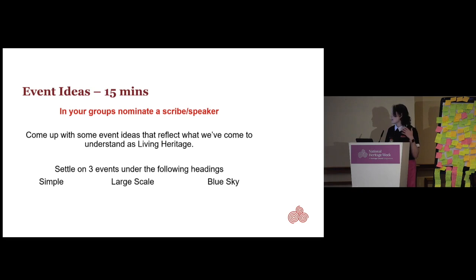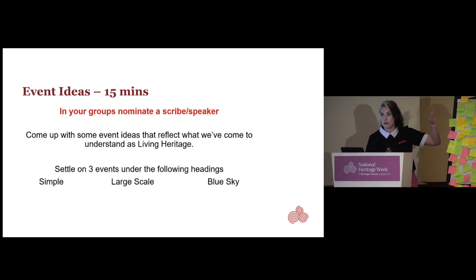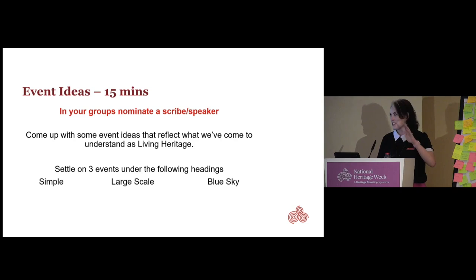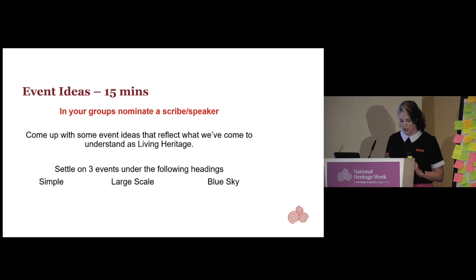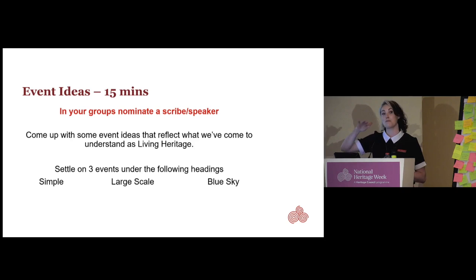We want you to think about three events. Something really simple that can be achieved on a small scale, then you want to go a bit larger scale, and I want an idea that's absolutely blue sky — won the euro millions, money is no object. What would you do if you absolutely had no restrictions on you whatsoever? We're going to give you 15 minutes. One person is going to have to explain what the ideas are, so keep those explanations as concise as possible because we are on the clock. Your 15 minutes start now.